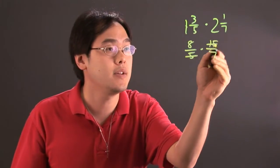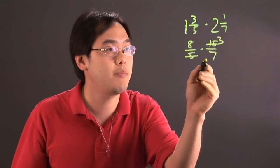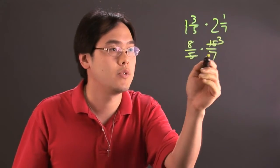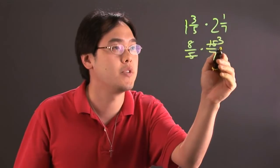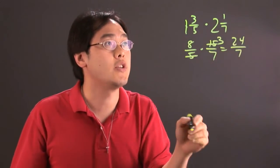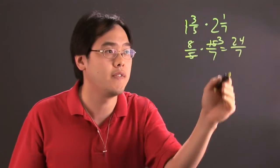In this case, five and the fifteen, the three stays on top. Eight and seven don't reduce, so eight times three is going to be twenty-four over seven. You can convert that to a mixed number if you like. I'll leave that up to you.